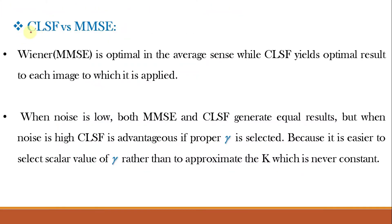Comparing CLSF versus MMSE (Wiener filter): the Wiener filter is optimal in the average sense, while CLSF yields optimal results for each individual image to which it is applied — meaning the Wiener filter provides average results across all images, while the CLS filter provides the best or most favorable result for each image. When noise is low, both filters generate equal results; when noise is high, the CLS filter is advantageous if proper gamma is selected. This is because it is easier to select the scalar value of gamma rather than to approximate K (which is SN/SF and is never constant since noise is random). The CLS filter removes the drawbacks of the Wiener filter, and in general the manual adjustment of filter parameters provides better output.